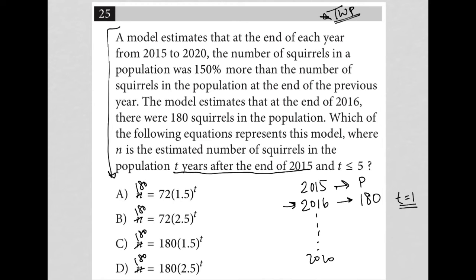So I'm going to just plug this in. I'm going to replace this T with one and ask myself, or just plug in my calculator, is it true that 72 times 1.5 to the first power is 180? Let's type that into your calculator. What I'm getting is that that's equal to 108. So that is not true. I want it to be 180. 180 does not equal 108.